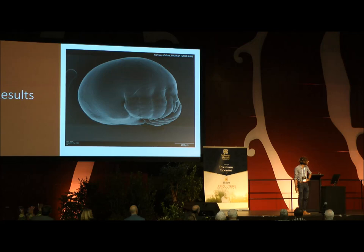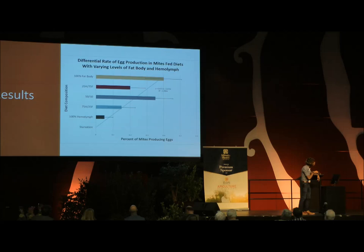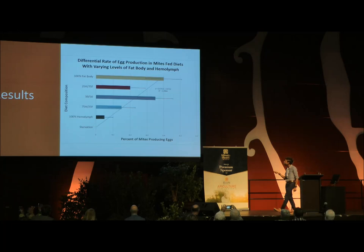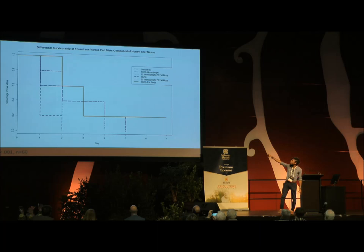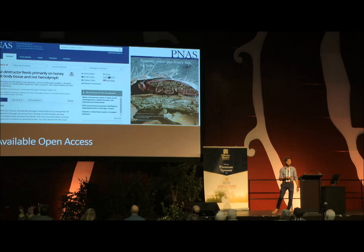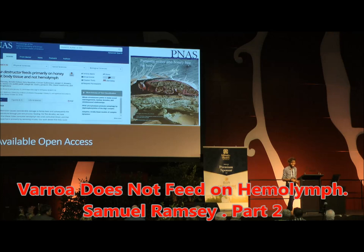I was so excited to see this thing. I even named it — her name is Ph.D. What we found is that if you starve Varroa, they do not produce any eggs. But if you feed them hemolymph, there is no significant difference in the amount of eggs produced versus being starved — they don't benefit from the bee's blood. However, if you feed them the fat body — any amount of fat body, from 25% up to 100% of the volume of the meal — they will produce eggs. They produce the most eggs when fed 100% fat body. The survivorship curve also shows they survive best when fed 100% fat body, and that there is no difference in survivorship when starved versus fed hemolymph.